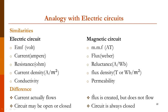Differences also exist. Current actually flows in the electric circuit, while flux is created but does not flow — it is induced. An electric circuit may be open or closed, whereas a magnetic circuit is always closed. These are the similarities and differences from the analogy point of view between electric and magnetic circuits.